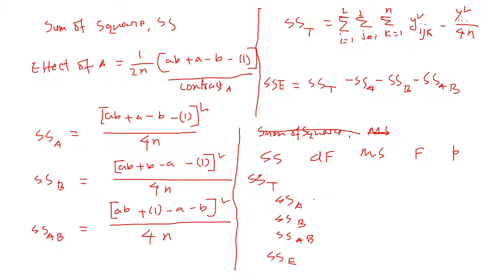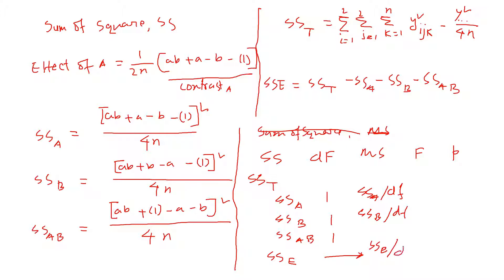For degrees of freedom: since we have two levels of A, df_A is one; df_B is also one; and df_AB, the interaction, is one times one, so also one. The df for error depends on the number of replications. The mean square is calculated as SS divided by its respective degrees of freedom for A, B, and AB, and similarly for error depending on replications.